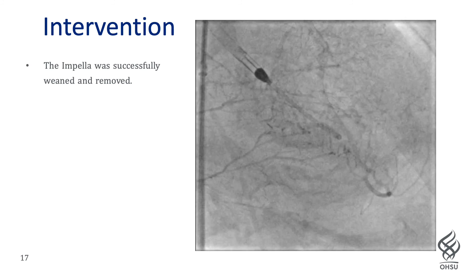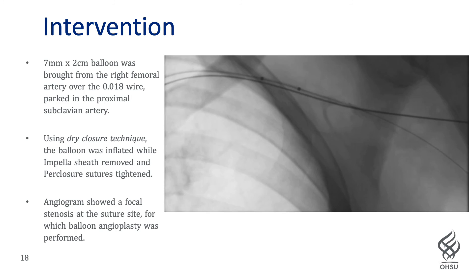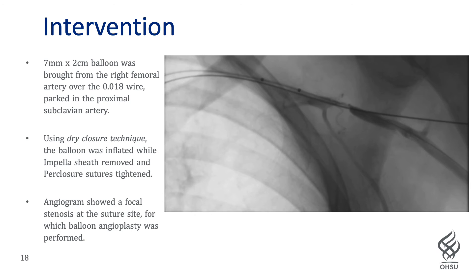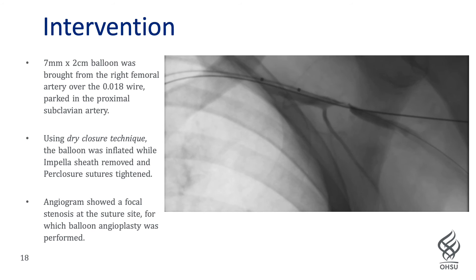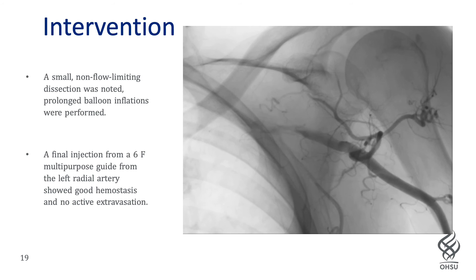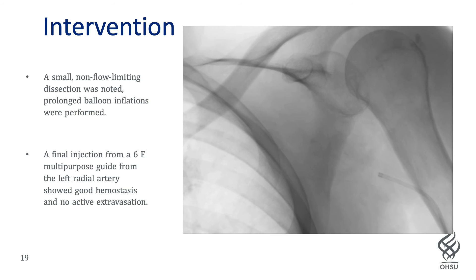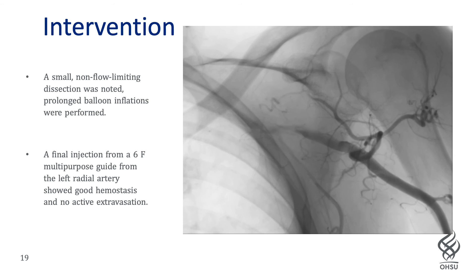The patient was weaned off norepinephrine and the Impella was successfully weaned and removed. To utilize a dry closure technique, a 7 by 20 mm balloon was brought up from the right femoral artery over a wire and parked in the proximal subclavian artery. The balloon was inflated, the sheath removed, and the sutures tightened simultaneously. Angiogram showed a focal stenosis at the suture site, likely due to capture of the posterior wall of the vessel. A balloon was advanced and the stenosis was dilated. Repeat angiogram showed successful fracture of the suture and resolution of the stenosis; however, it demonstrated a small non-flow-limiting dissection, for which prolonged balloon dilations were performed. Final injections showed good hemostasis, no extravasation, and no remaining stenosis.